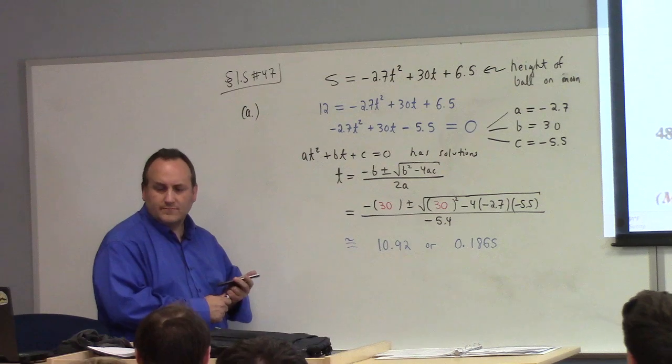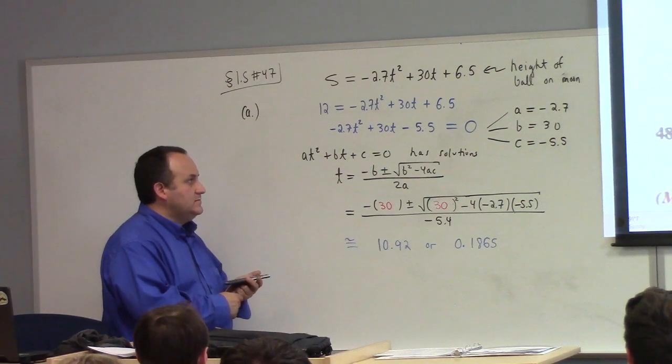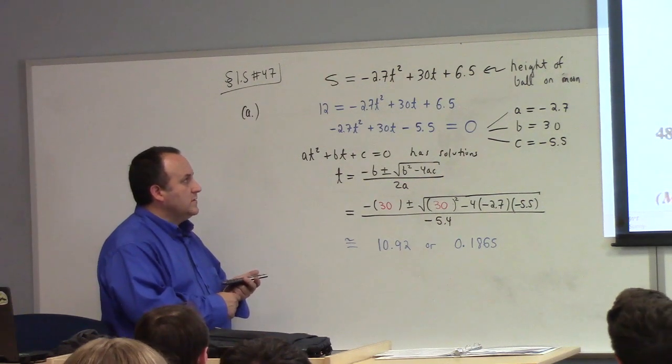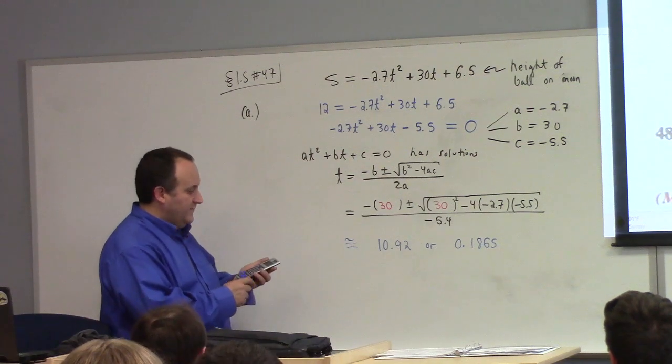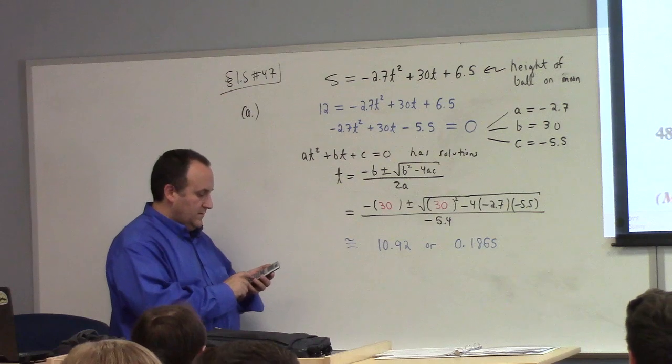I have a question. How does it get 5.5? Oh, it should be 6.5. Oh, yeah. Never mind. It's the 12. 6.5 minus 12? The 12 makes it drop to that, yeah. It's okay.